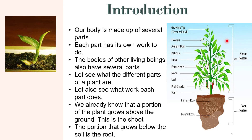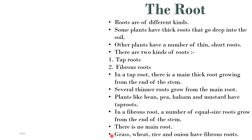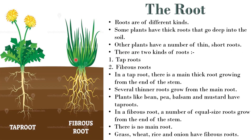The part growing above the ground is called the shoot system and the part growing under the ground is called the root system. Roots are of different kinds. Some plants have thick roots that go deep into the soil, while other plants have a number of thin, short roots. There are two kinds of roots: tap roots and fibrous roots, as we can see in this image.